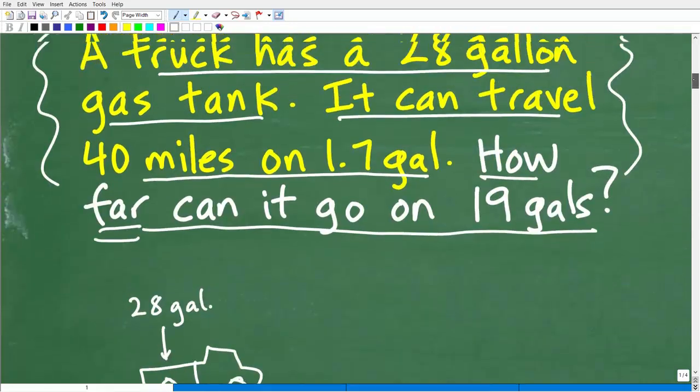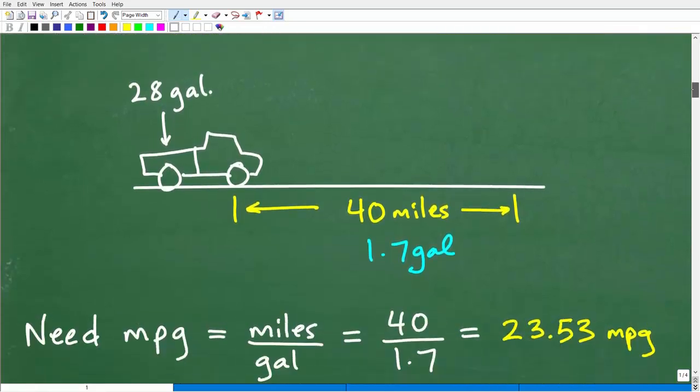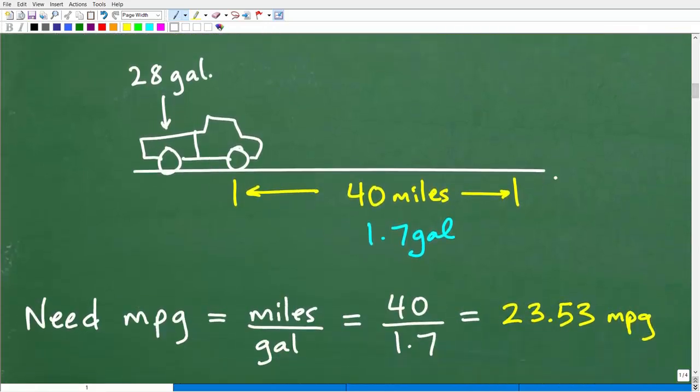I'll talk about what is an extra piece of information that's not relevant to solving this problem in a second, but let's go ahead and model the situation. After we know what's going on, let's see if we can kind of create some sort of visual model. Here I'm drawing a little road. Here's my little truck. So I know that this little truck went 40 miles on 1.7 gallons. Here's my truck and I know its gas tank has 28 gallons or a 28-gallon capacity. But if you think about it, what do I want to know here? How can I determine how far this thing can go on 19 gallons?